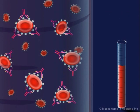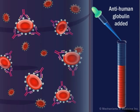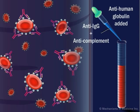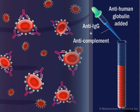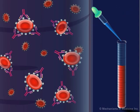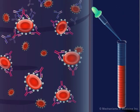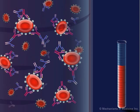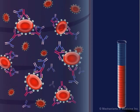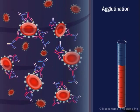These red blood cells are incubated with anti-human globulin containing both anti-IgG and anti-complement. The anti-human globulin binds to the patient's antibody, coating the red blood cells, resulting in agglutination.